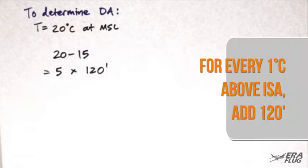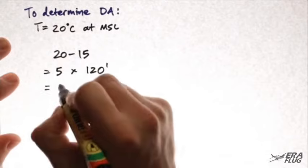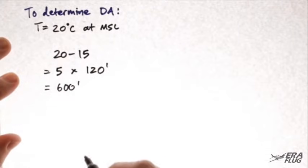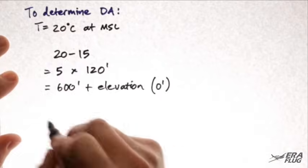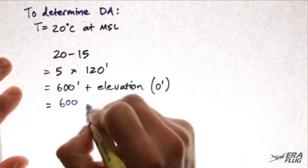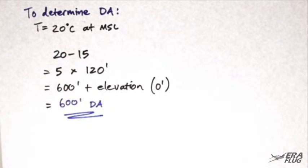Remember, for every 1 degree C above ISA, we have to add 120 feet. That gives us 600 feet, plus our elevation or altitude, which in this case is 0, being at mean sea level. And we end up with a density altitude of 600 feet.